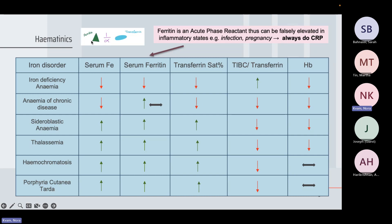An important thing to know is that ferritin is an acute phase protein — in inflammatory states it will be raised. Ferritin and transferrin are inversely correlated: if ferritin is raised, transferrin has to be low. In anemia of chronic disease, ferritin is high due to the inflammatory state, so transferrin will be low. Iron is also low because in chronic disease you're not absorbing enough, or you're losing it — for example in chronic kidney disease — or using too much of it, as in cancer.